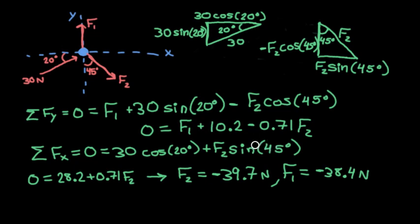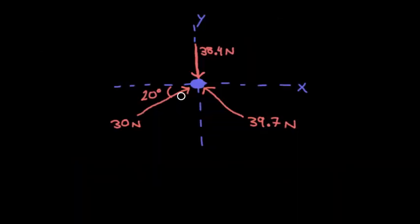So we can redraw this diagram with the forces pointing in the correct direction, putting our little arrows here in the correct direction, and then writing out the amount of force that we found for each of those arrows. And then we have our angles here.